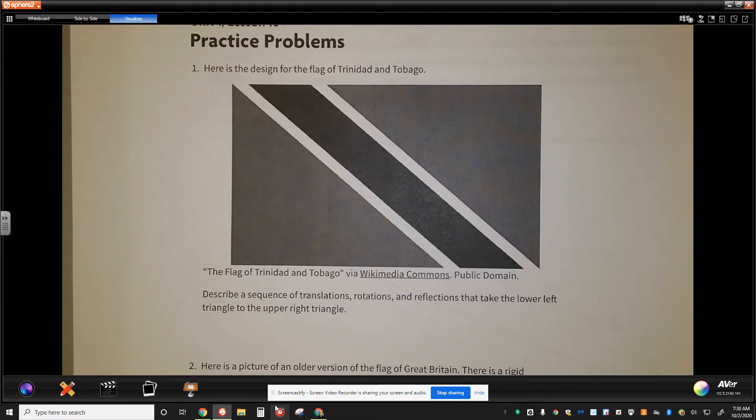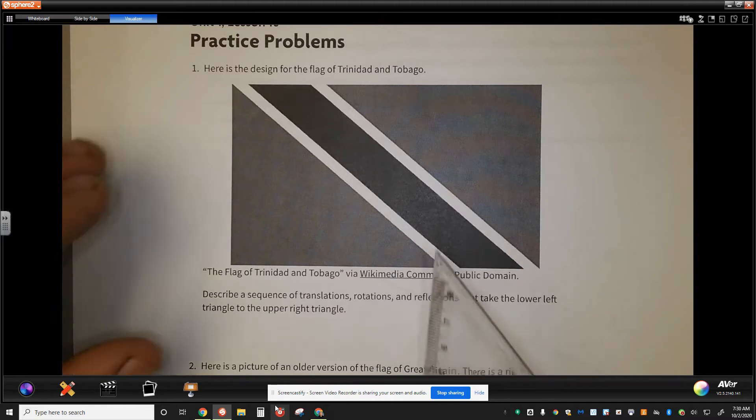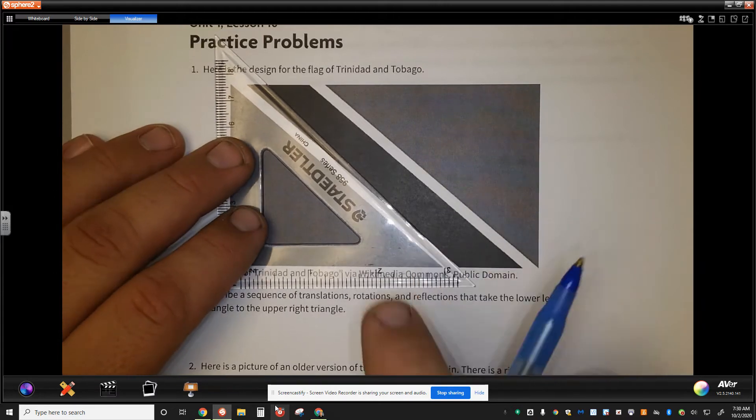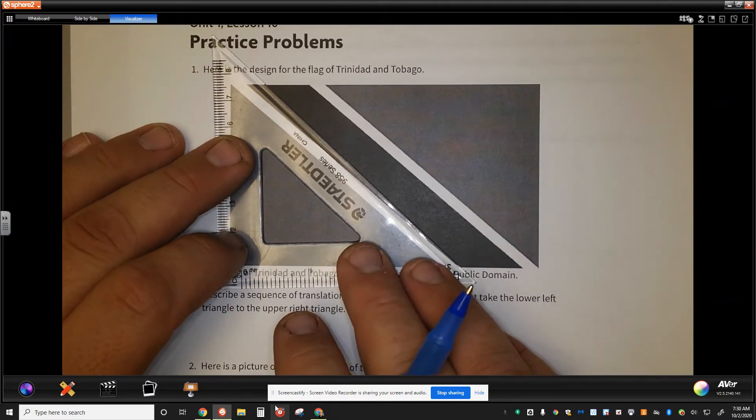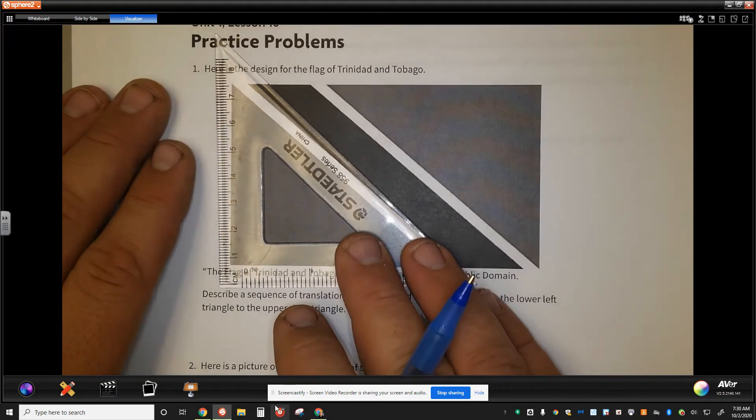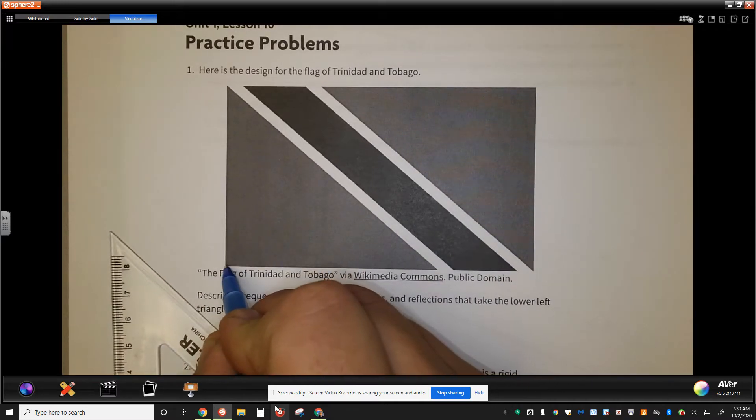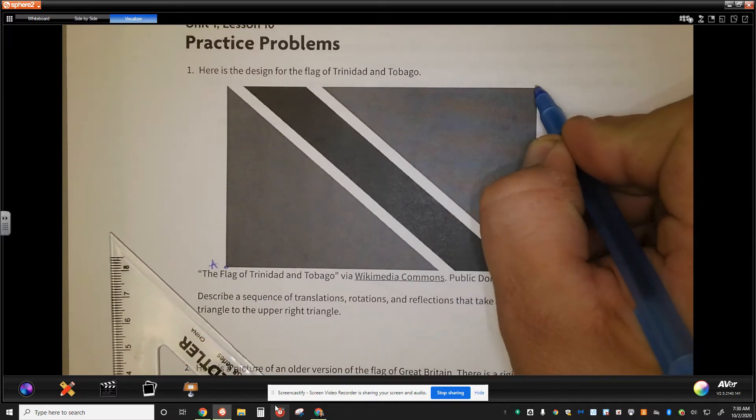Remember that when we're describing that sequence of translations, rotations, reflections, we need to be very consistent in the way that we talk about this. Lesson 4 has great examples for how to set that up for the wording. But what I'm going to show you, I'm actually going to do this with this triangle. I want you to think about this triangle as being the same size. The very first thing I think of is that I want to look for corresponding points. I know that these two points are corresponding, so I would call this one point A and this one point B.